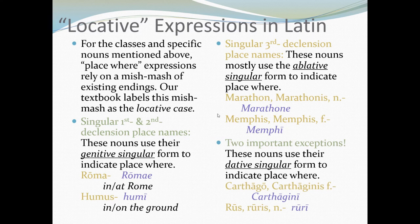There are two important exceptions to this. These are Carthage and the word Rus meaning the country or the countryside. These important exceptions substitute the dative singular form to indicate place where. And you can see Carthagony, which would mean in or at Carthage. Ruri, we would probably translate as in the country or in the countryside.